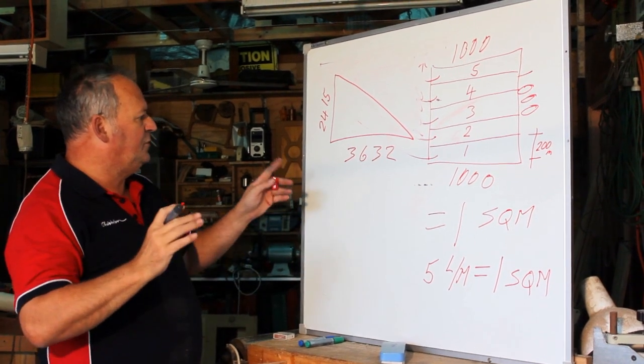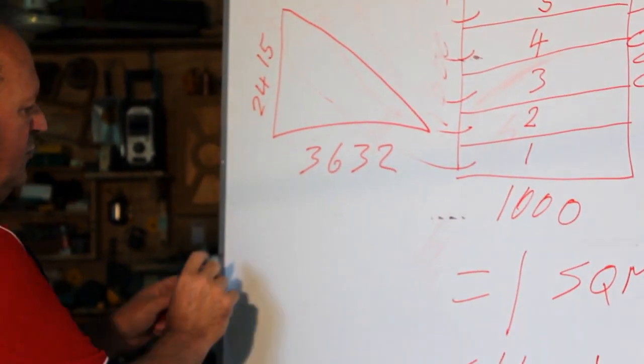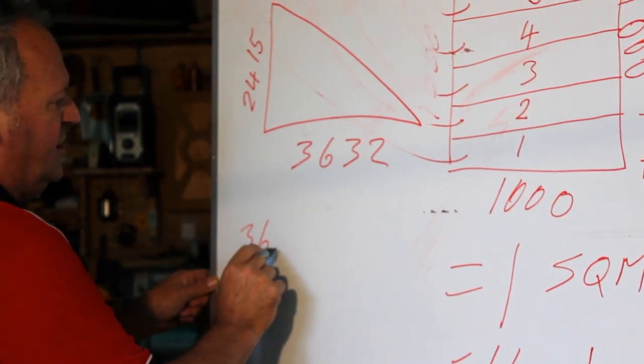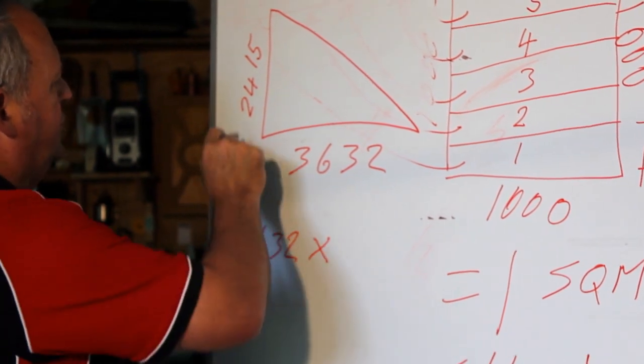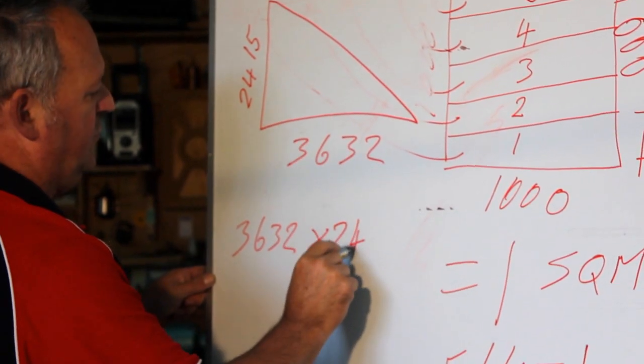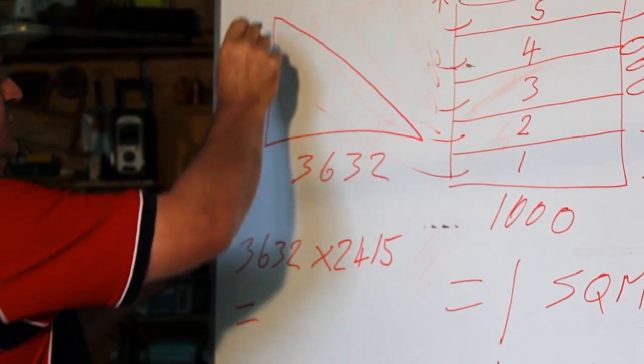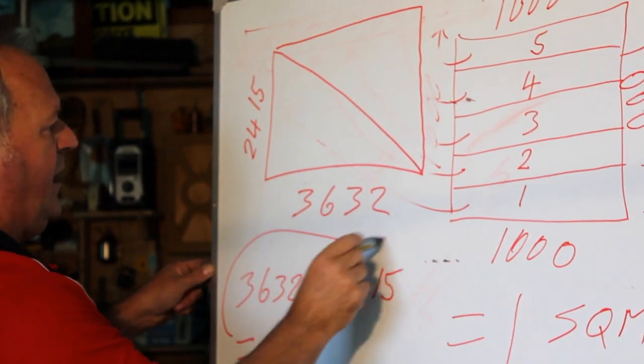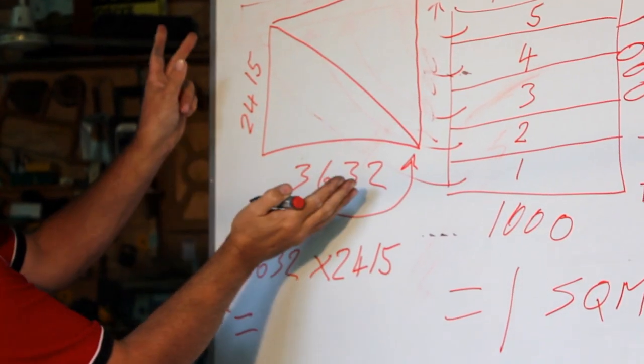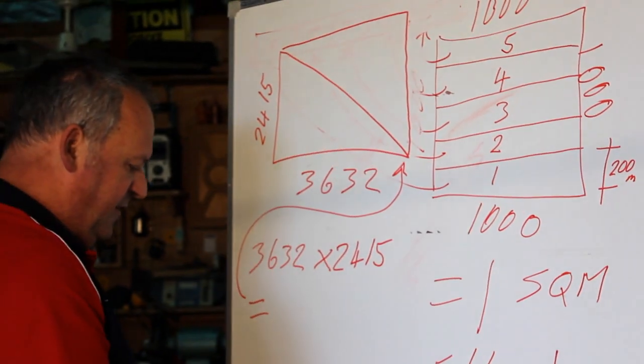To work out the area of the triangle, we go 3,632 times 2,415. And that equals, well, we'll have to work that out, but we're going length by width, so we're working out the whole lot. So, let's get the phone out.